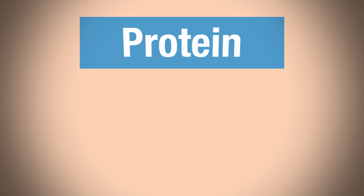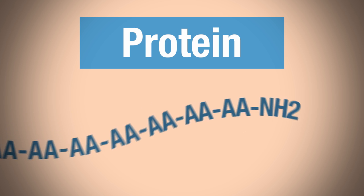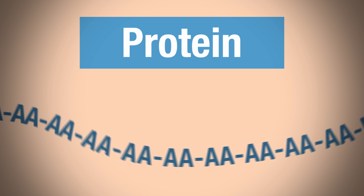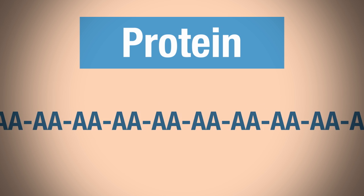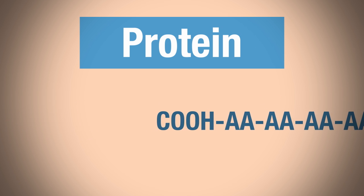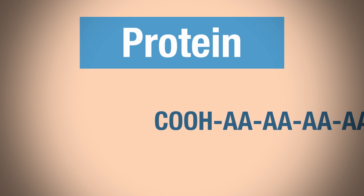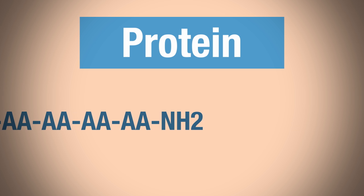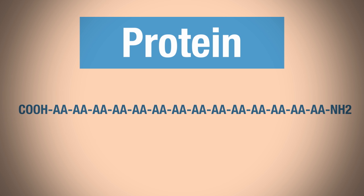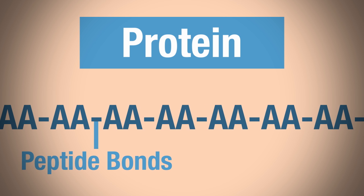Let's take a look at a crude diagram of a protein. A protein consists of a string of amino acids — the monomer or subunit is the amino acid. On one end we have a carboxyl group, the COOH. On the other end we have the amine group, the NH2. All of these amino acids are held together via peptide bonds.